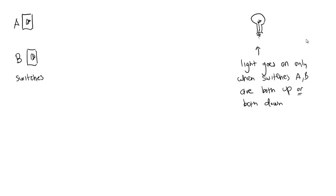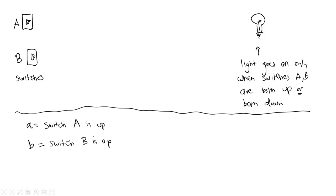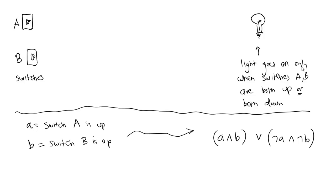Let's see if we can turn this into a circuit that encodes a propositional logical statement. Let A be the statement that switch A is in the up position — true means up, false means down — and let B be the statement that switch B is in the up position. The light bulb statement is: A and B, or NOT A and NOT B. That's a disjunction between two different conjunctions, saying they're both up or they're both down.